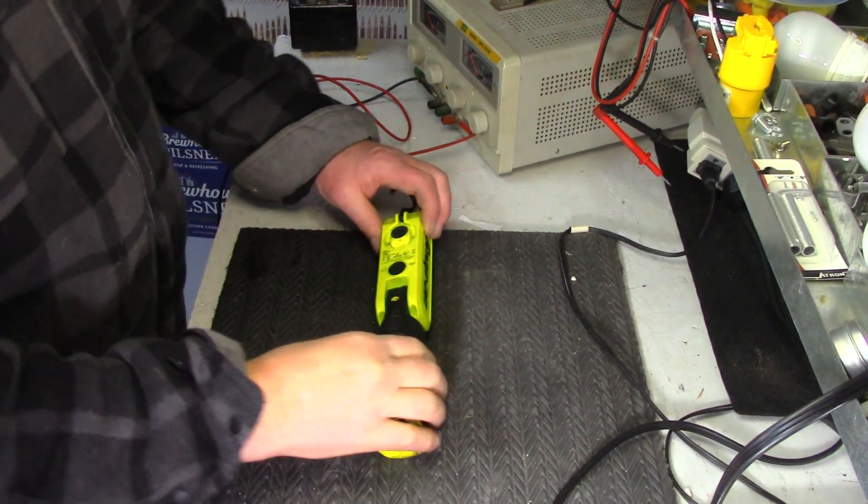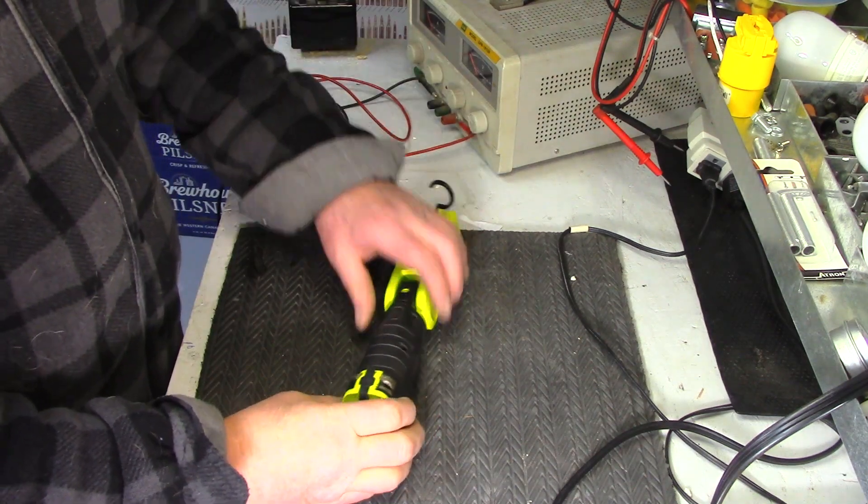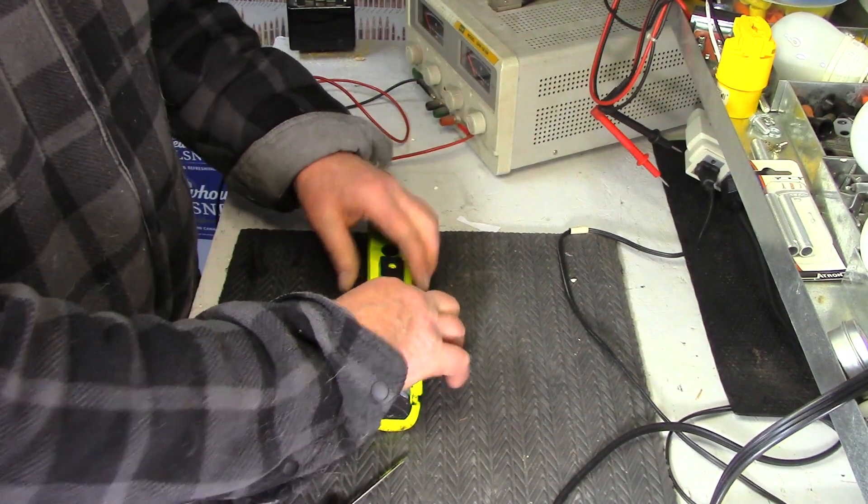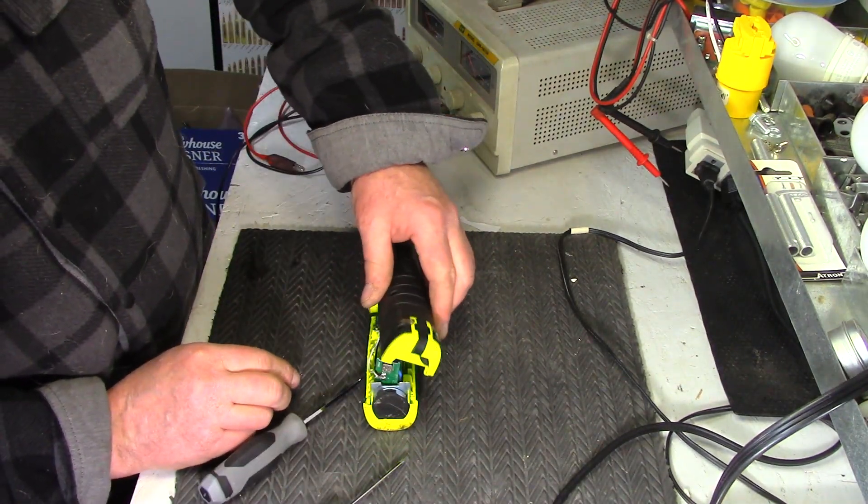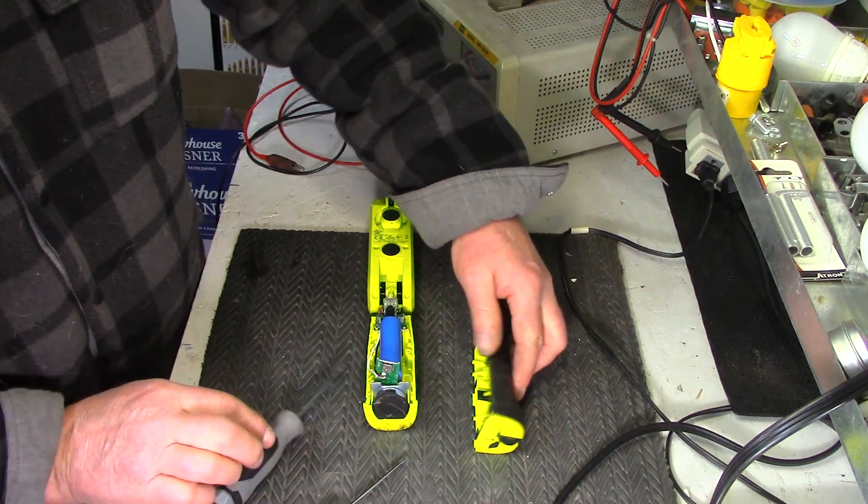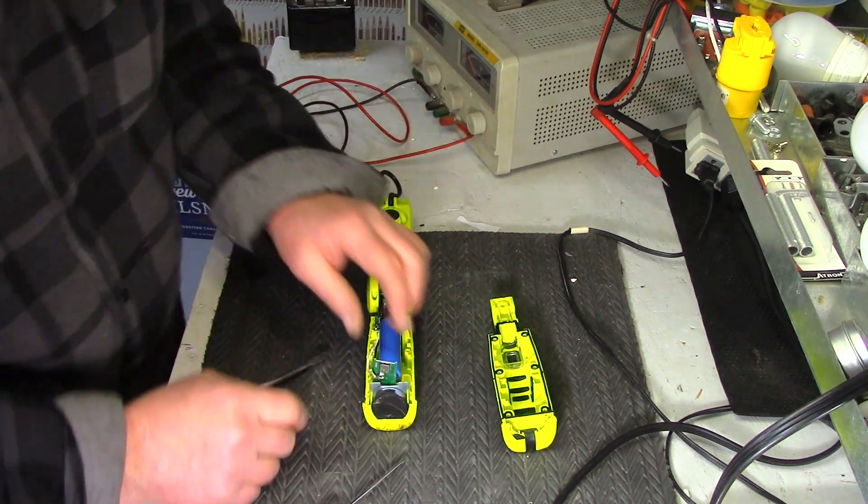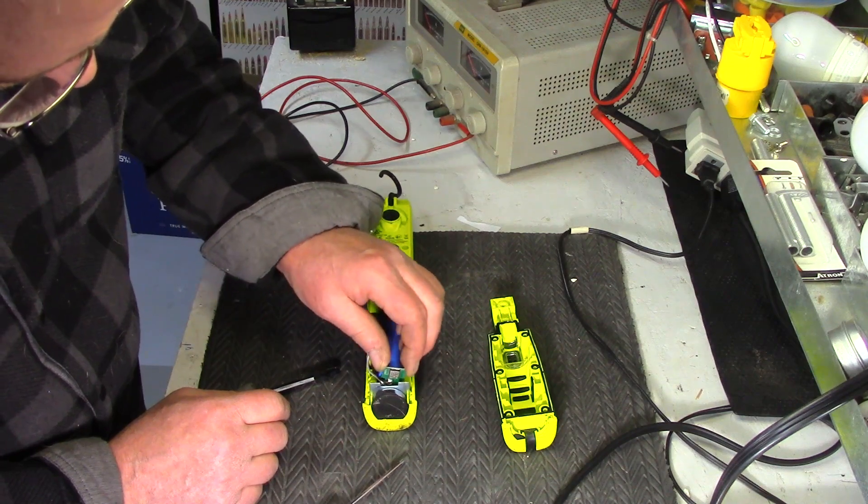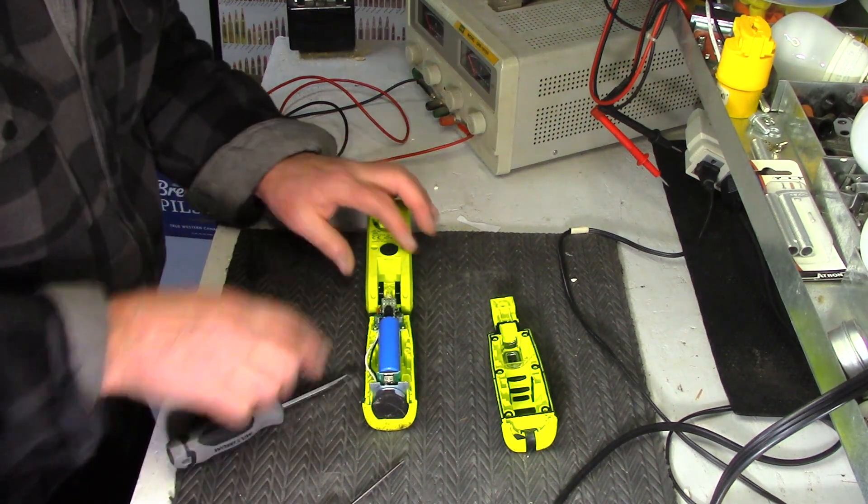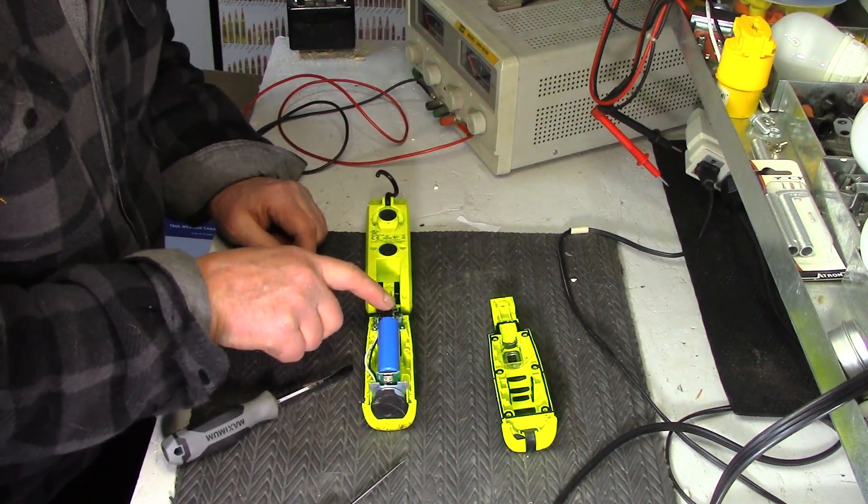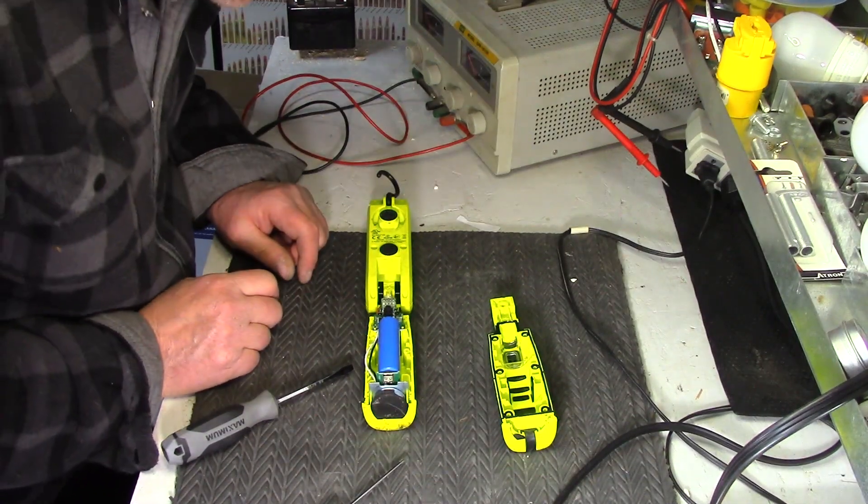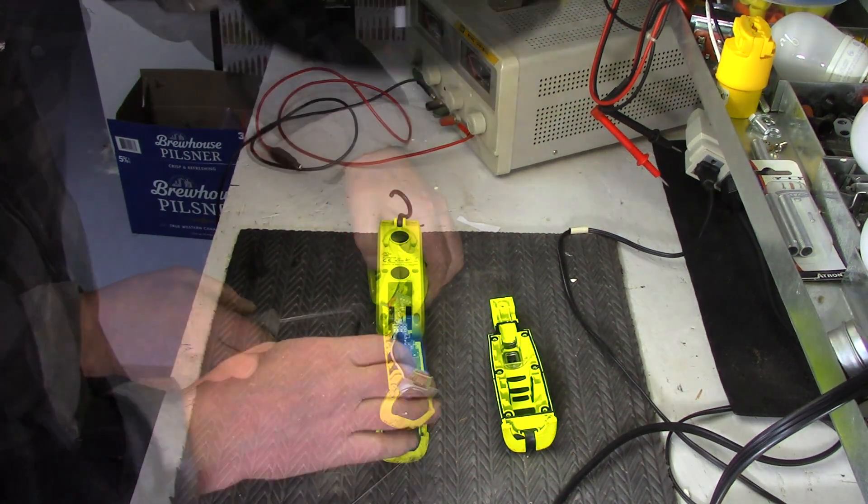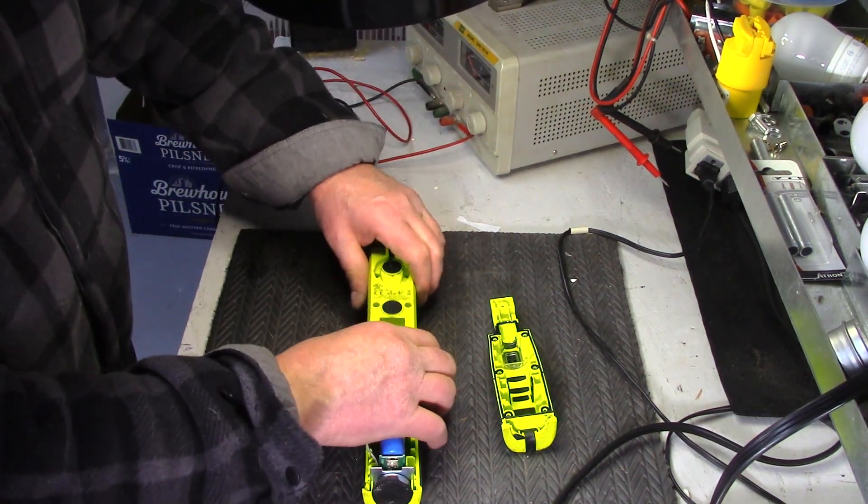Okay, I got all 15 screws out. Let's see if I can separate this. There's an on-off switch. I don't see anything out of the ordinary yet. Let's split this front half.